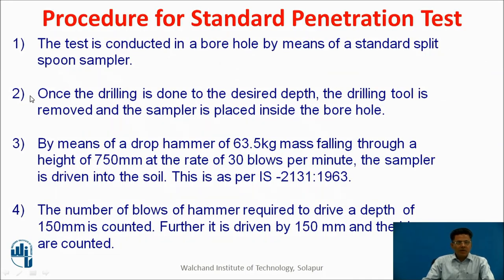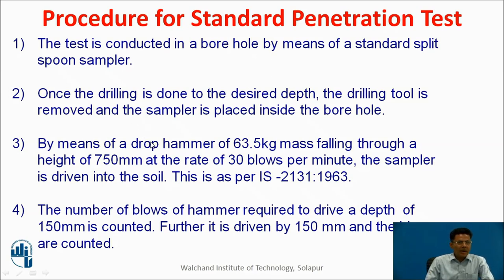The procedure for the standard penetration test: the test is conducted in a borehole by means of a standard split spoon sampler. Once drilling is done to the desired depth, the drilling tool is removed and the sampler is placed inside the borehole. By means of a drop hammer of 63.5 kg mass falling through a height of 750 mm at the rate of 30 blows per minute, the sampler is driven into the soil.